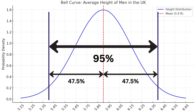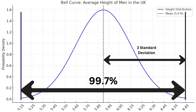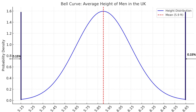At the extreme end of the bell curve, three standard deviations from the mean gives us a range of 5.15 feet to 6.65 feet, which includes 99.7 percent of the male population in the UK. This means if you're under 5.15 feet or over 6.65 feet, you're in the 0.15 percent of the population on either side. Now that we understand what the bell curve is showing us, we can apply it to greyhounds.